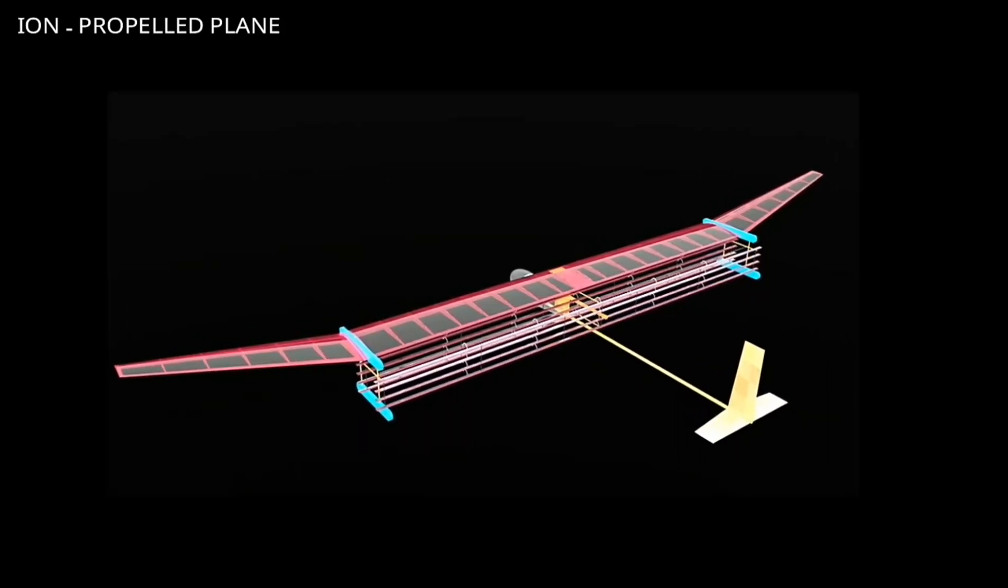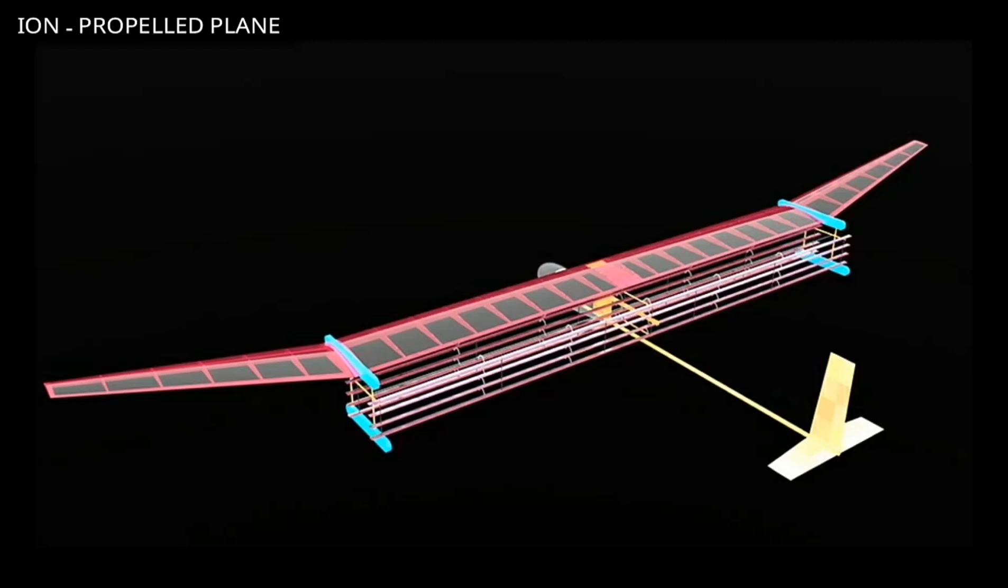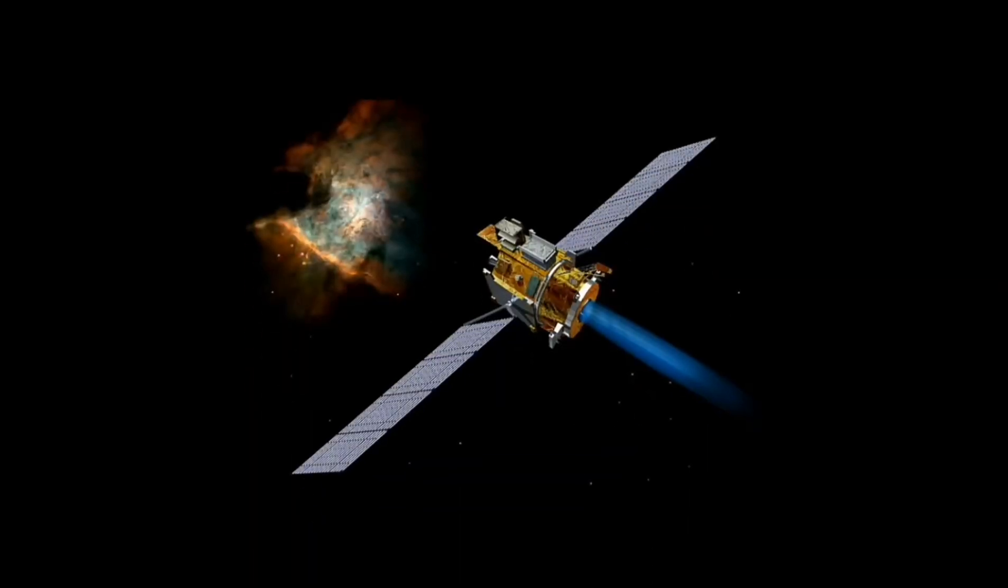Maybe we couldn't be able to propel the spacecraft from Earth using only ions due to the strongest gravitational pull and the air resistance, but the most important section of the ion thrusters is how they move spacecraft into space.